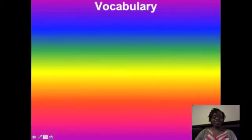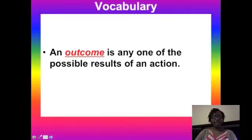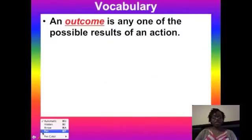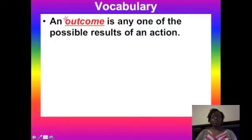Before we get started there are some key vocabulary words that you will need to define. The very first one is outcome. Outcome is any one of the possible results of an action. That action may be flipping a coin and you could get heads or tails, or rolling a die and you could get a one, a four, or a six.